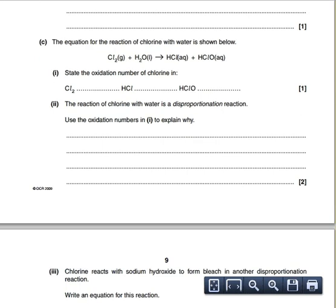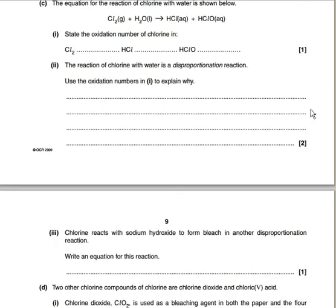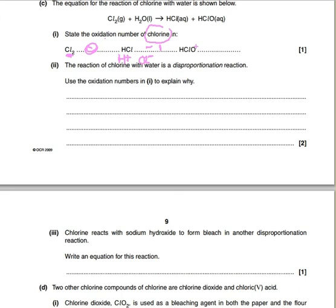The equation for the reaction of chlorine with water is shown. State the oxidation number of chlorine in each species. In Cl₂ it's a molecule, not an ion, so it's zero. In HCl, H is +1 and chlorine is Cl⁻, so the oxidation state is minus one. Now in HClO...